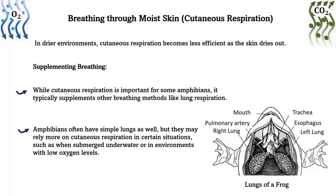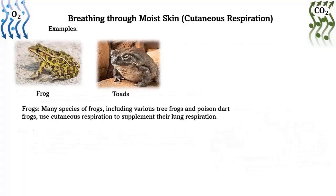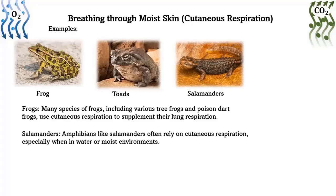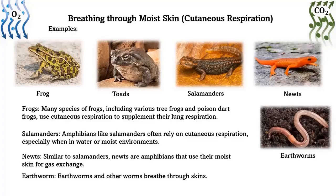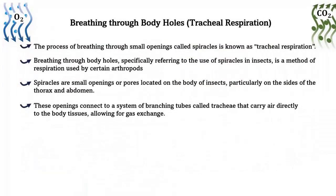Supplementary breathing: while cutaneous respiration is important for some amphibians, it typically supplements other breathing methods like lung respiration. Amphibians have simple lungs as well, but may rely more on cutaneous respiration when submerged underwater or in environments with low oxygen levels. Examples: frogs — many species including tree frogs and poison dart frogs use cutaneous respiration to supplement lung respiration. Salamanders often rely on cutaneous respiration especially when in water or moist environments. Newts, like salamanders, use their moist skin for gas exchange. Earthworms and other worms also breathe through their skin.